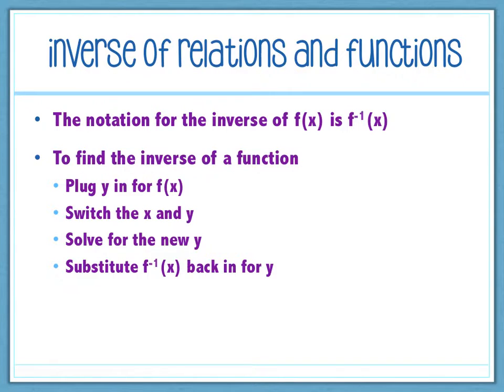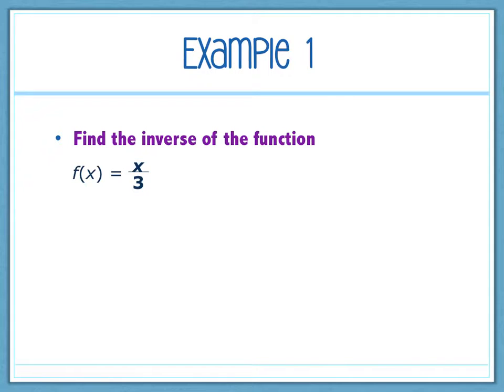And then it's just a step-by-step process. The first thing you're going to do is plug in y for f of x. So you're simply just replacing f of x with y. And then you are going to switch the x and the y, just like we just did with the points. We're going to do with the variables. So the y becomes the x, the x becomes the y. And then you want to solve for the new y, so you want that new y to be isolated. And then the last step is to take the y and replace it with how we show notation for the inverse function, which is f negative 1 of x.